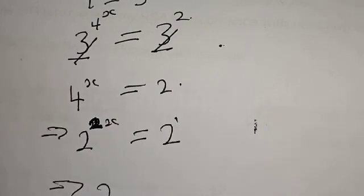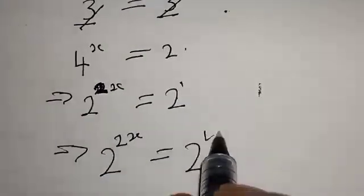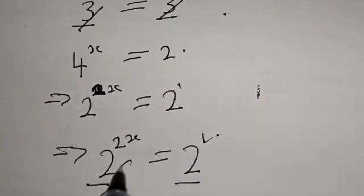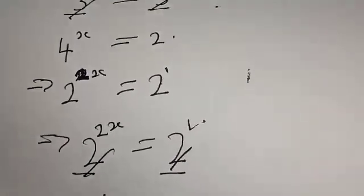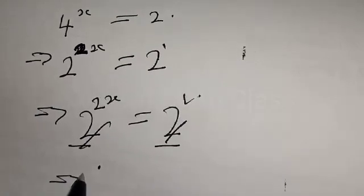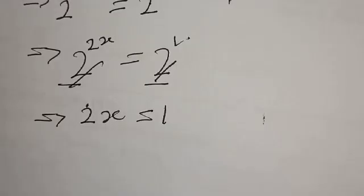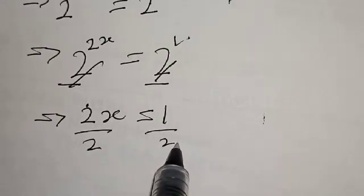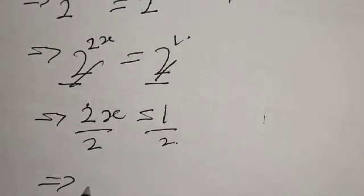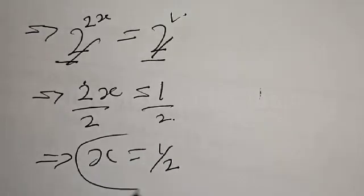We are left with 4 raised to power x is equal to 2. We know that 4 is 2 squared, so this implies 2 raised to power 2x is equal to 2 raised to power 1. We have the same base, so the bases cancel. This implies that 2x is equal to 1. Divide both sides by 2: we get x is equal to 1 over 2. That is the value of x.